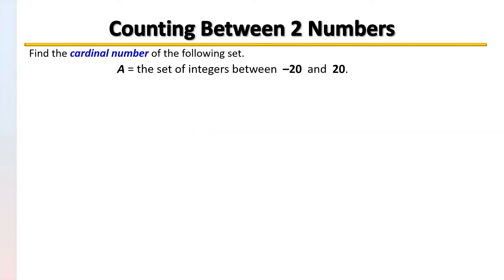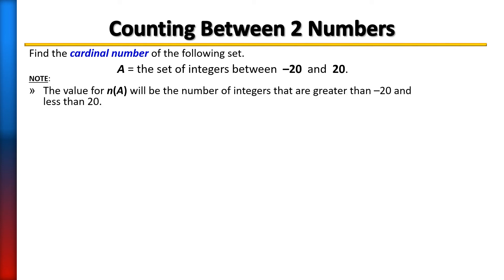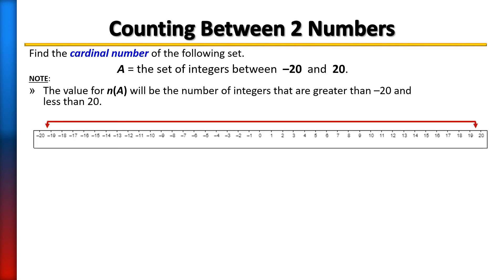In this example, I'm asked to find the cardinal number of the following set. Now, set A contains a set of integers between negative 20 and 20. In other words, we want to know how many numbers are between those numbers. So it would include numbers that are greater than negative 20 but less than 20. If you were to visualize it on a ruler or number line, it's going to look like so. Again, we want to know how many numbers there are between them. Well, there's a method that you can use to help you in counting those numbers.